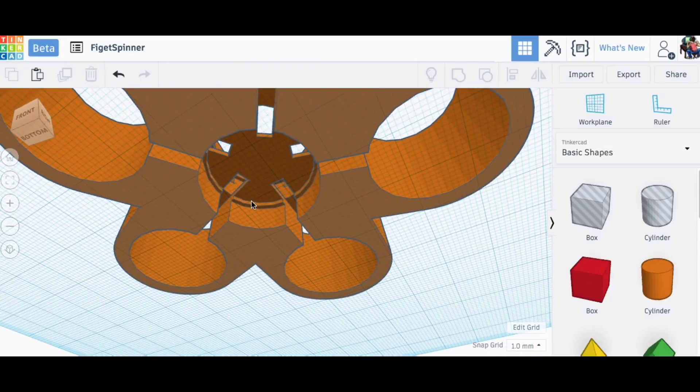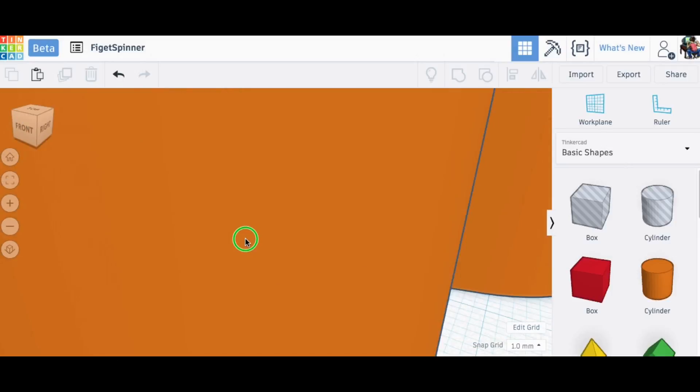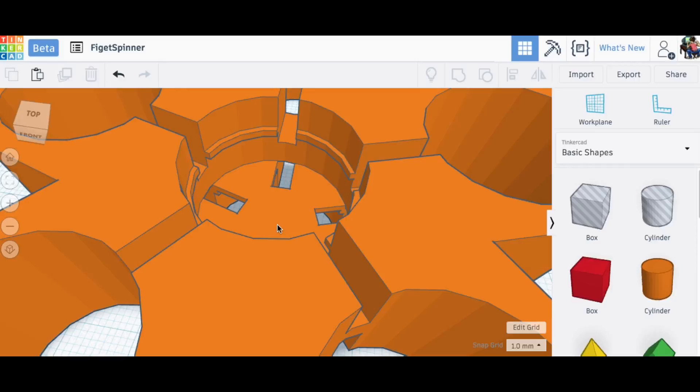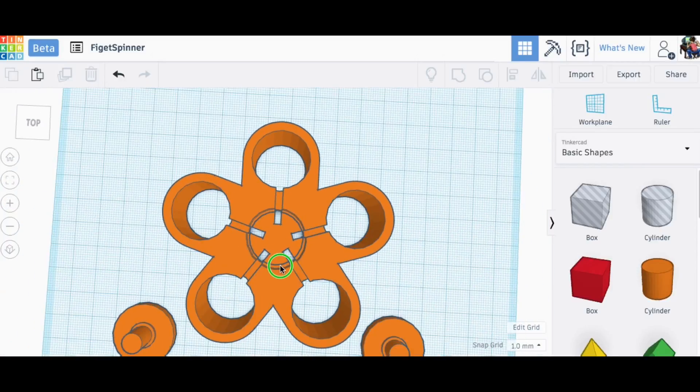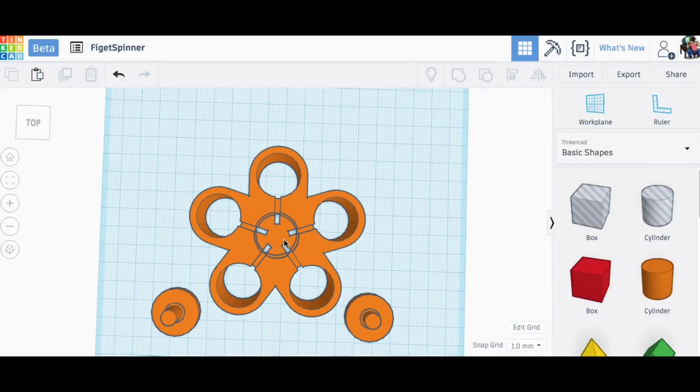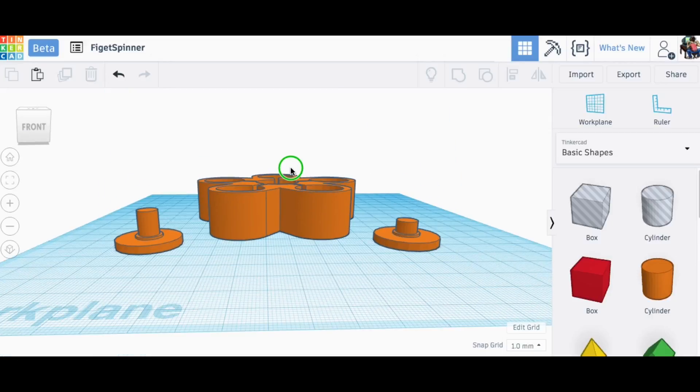And then on the bottom I put another lip here so the bearing was lifted away from that solid wall and wouldn't rub against it. And that's pretty much the whole design. It's not really that difficult to put together. And like I said, a lot of it was in those Tinkercad tips and tricks videos.